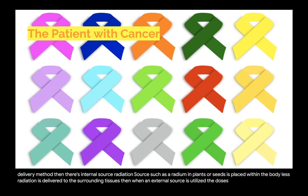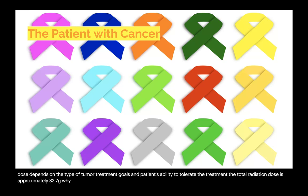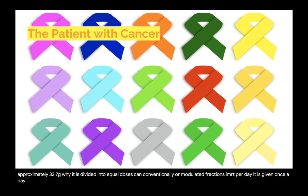The total radiation dose depends on the type of tumor, treatment goals, and the patient's ability to tolerate treatment. The total radiation dose is approximately 30 to 70 Gy, divided into equal doses — conventionally or modulated fractions (IMRT) — given once a day, five days a week, for five to eight weeks.